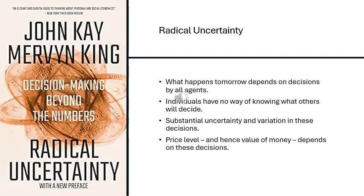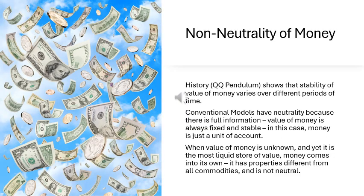Another critical insight of Keynes was radical uncertainty. Given that the system is complex and what happens depends on the decisions of a large number of agents, nobody can predict what will happen. This is again in conflict with standard economic methodologies, which assume that expectations are rational — that people can more or less forecast what is going to happen. These issues — heterogeneity, complexity, and uncertainty — play a central role in the theory of money.